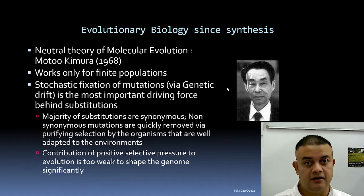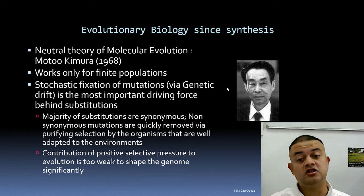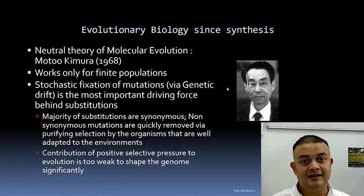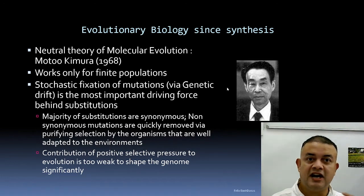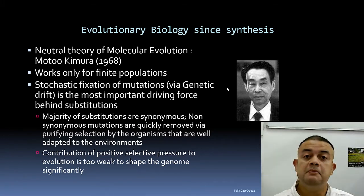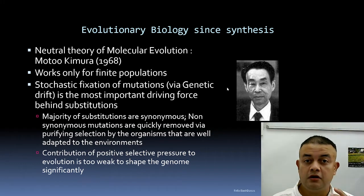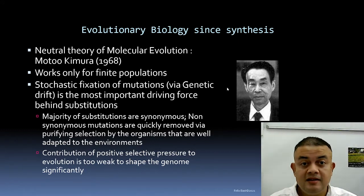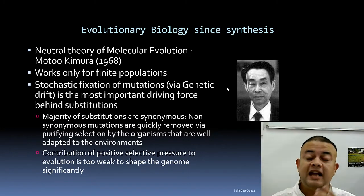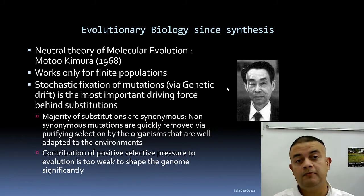The majority of substitutions are synonymous — that means silent. Non-synonymous mutations, which change amino acids, are quickly removed by purifying selection. Organisms well adapted to the environment resist such changes — it's like a status quo. Purifying selection works because babies fail to be born; if mutations happen in a very important gene like DNA polymerase, the fetus dies inside the uterus — that is how deleterious mutations are eliminated.